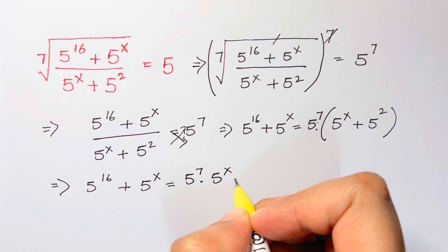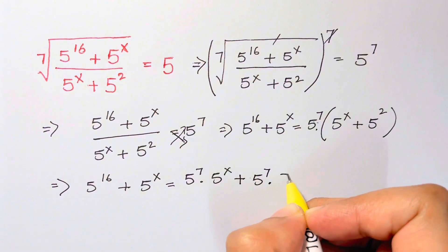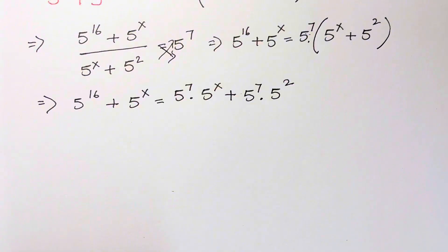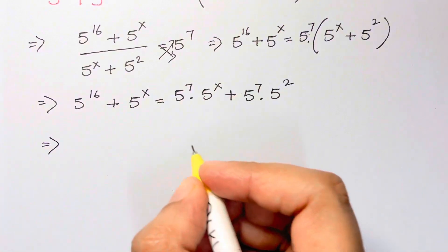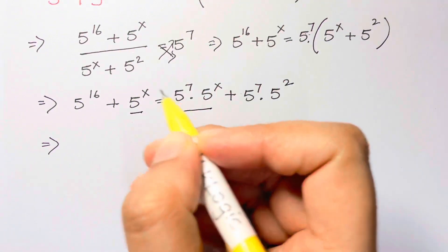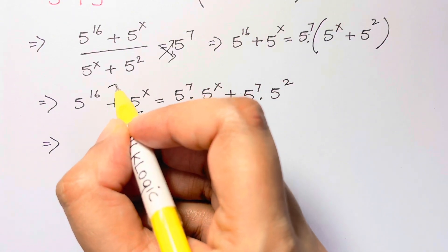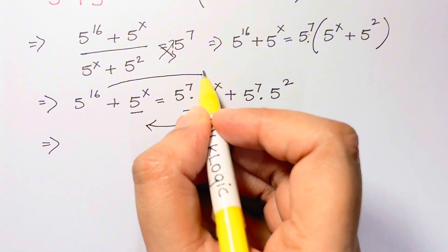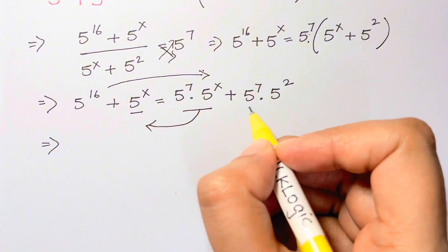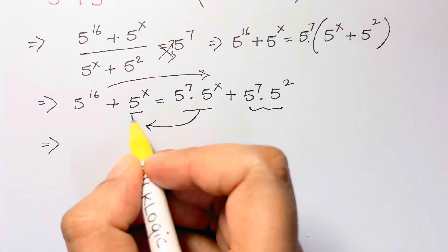As you can see, we have an x term on the left and an x term on the right. I'll bring the x terms to one side and the constants to the other side. 5 to the x minus 5 to the 7th times 5 to the x...